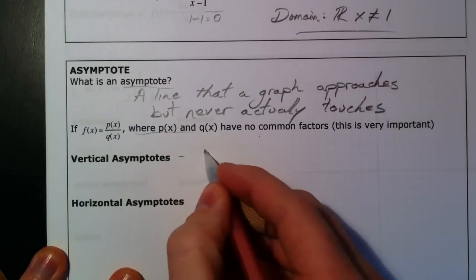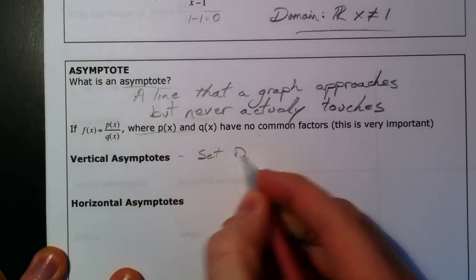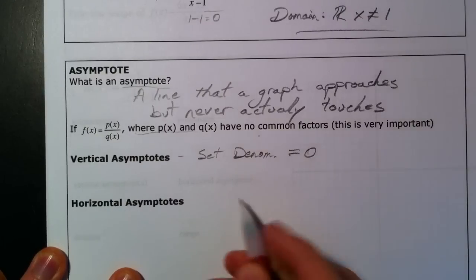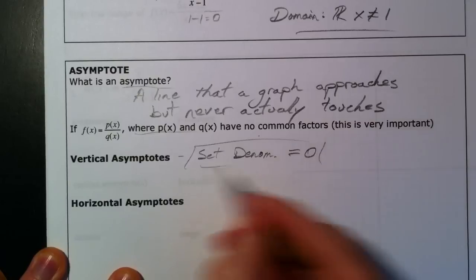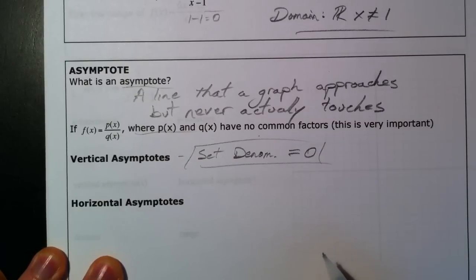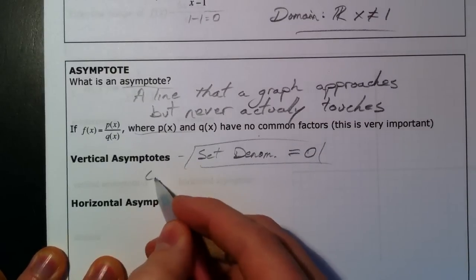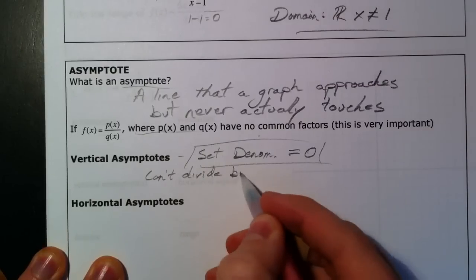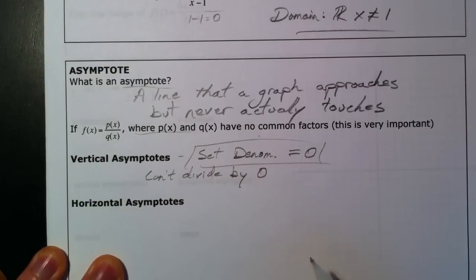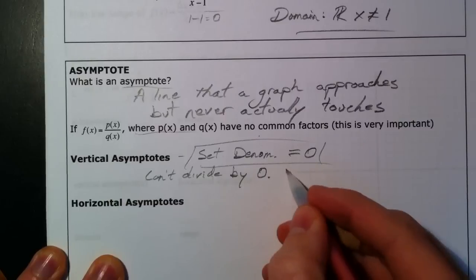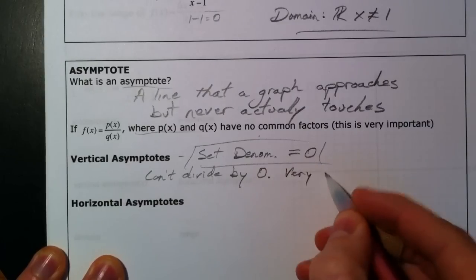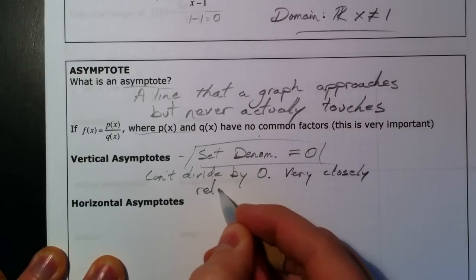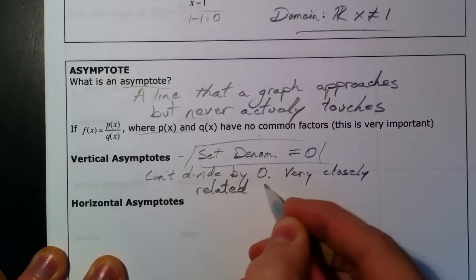Set the denominator equal to 0. This is what you want to do to find vertical asymptotes. Can't divide by 0. And that's why these happen. These are very closely related to your domain.